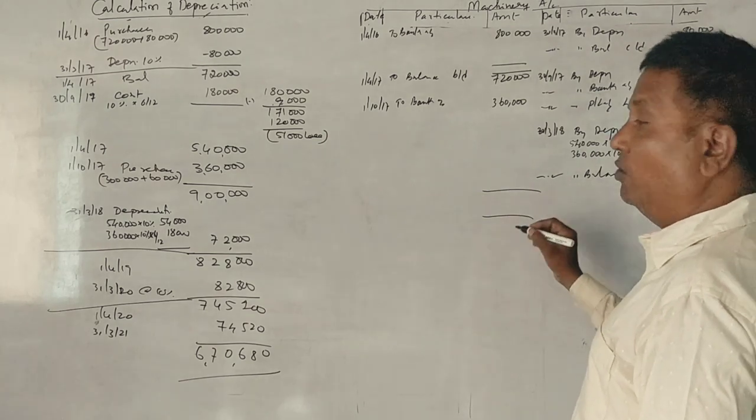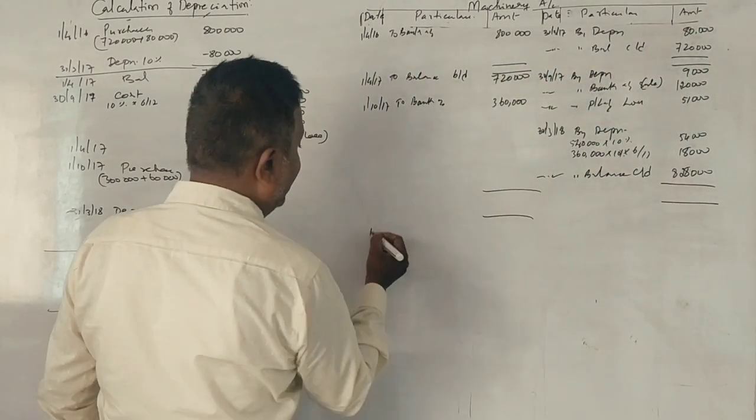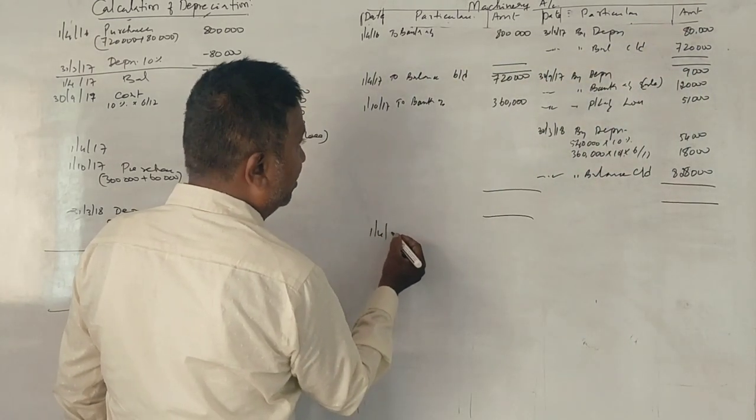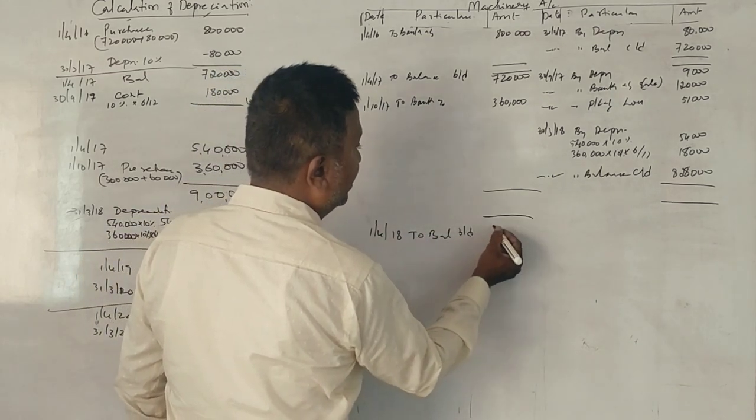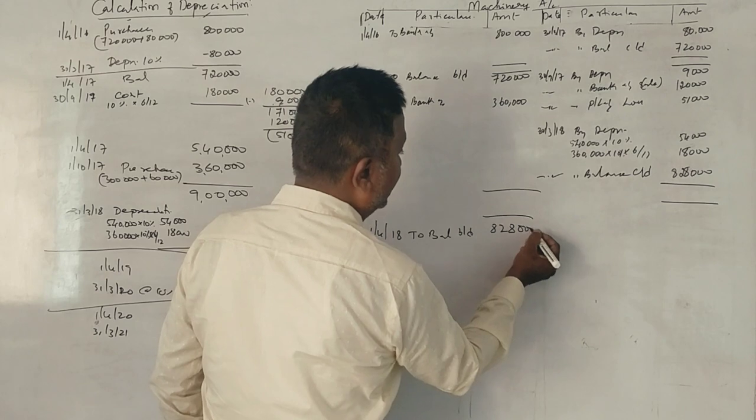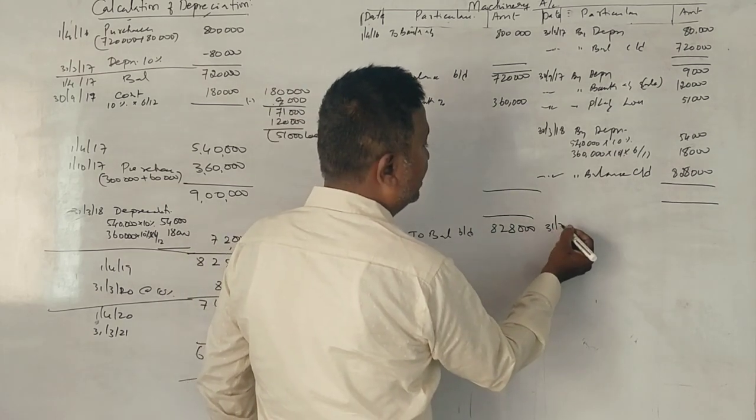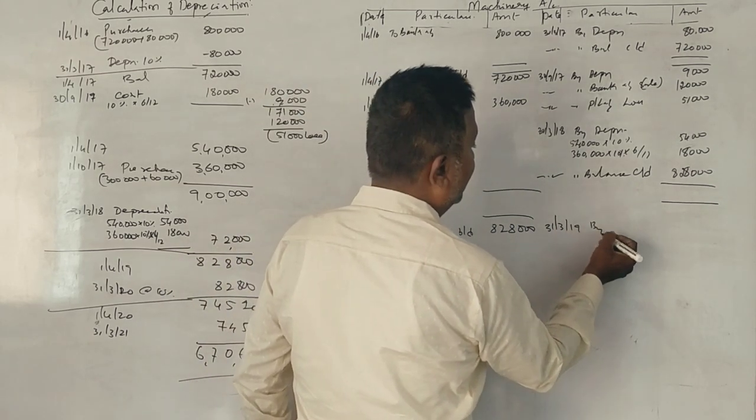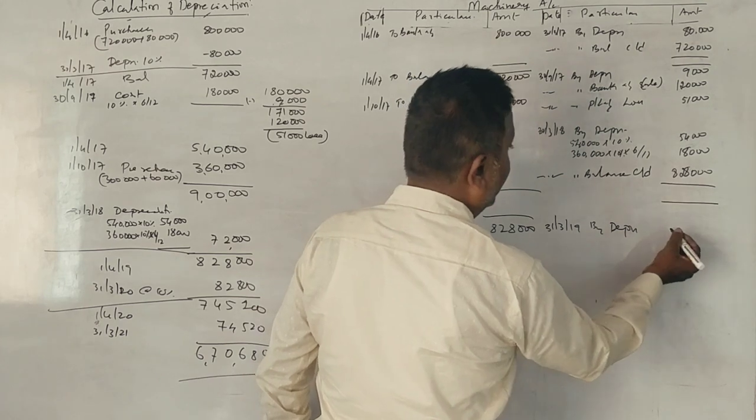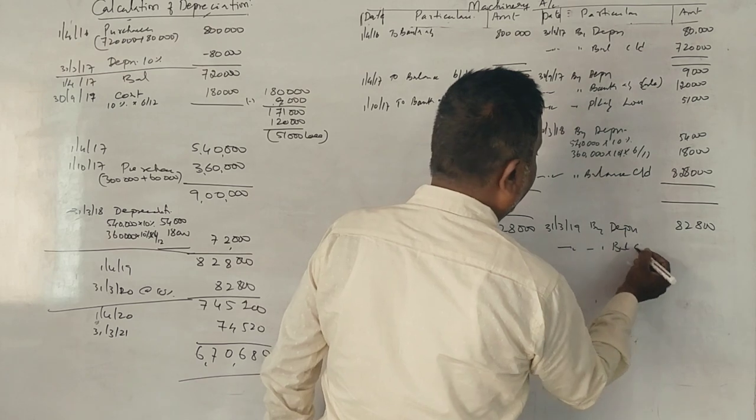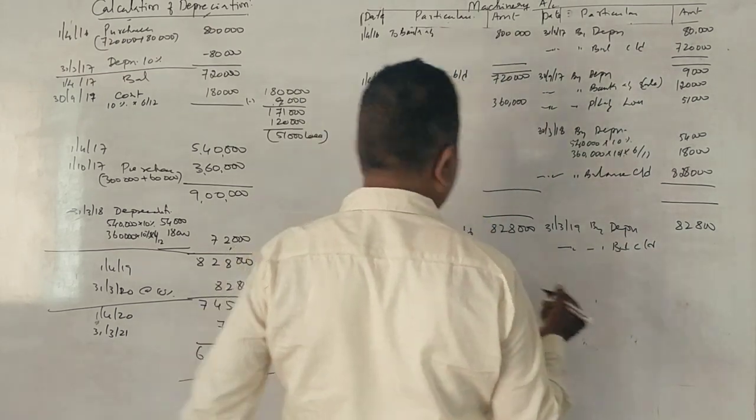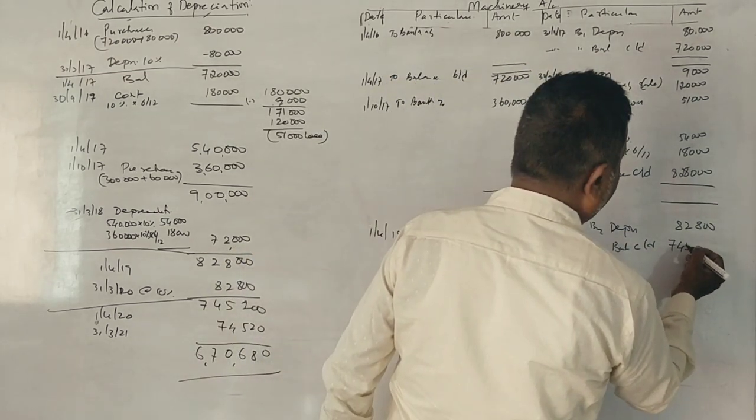Balance carried down is $828,000. 1st April 2018, balance brought down $828,000. 31st March 2019, by depreciation $82,800. Balance carried down $745,200.